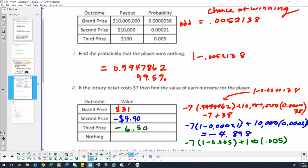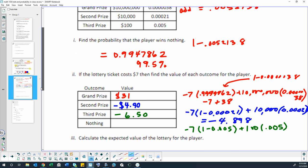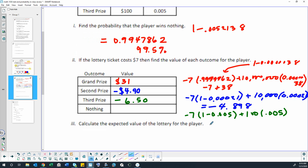The chance of buying a lottery ticket and winning nothing is so close to 1, we could just call that $7. You're throwing $7 away if you buy a lottery ticket. That would come from doing negative 7 times 0.9947862, which rounds to $7.